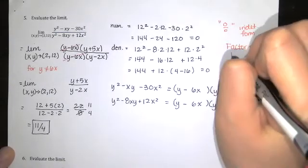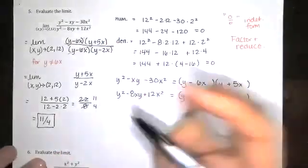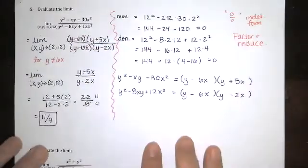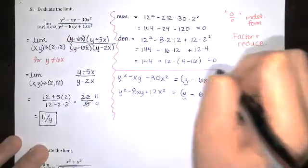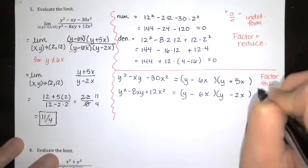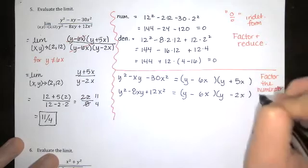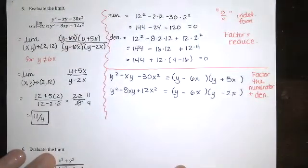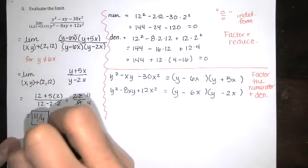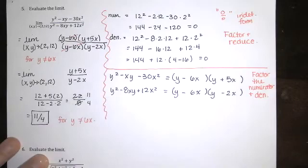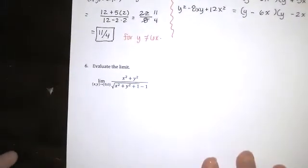So that's how we handle that. Factor and reduce. This is us showing that the numerator and denominator are both zero. And then over here, we're just factoring. Now, I would prefer not to do my work this way, but I sort of did it that way. So this limit is equal to 11 over 4 when y is not equal to 6x. We don't want y to equal to 6x because that's not in the domain.